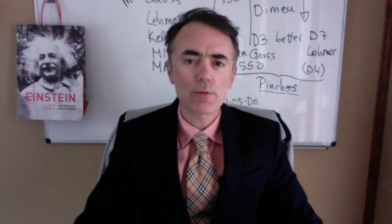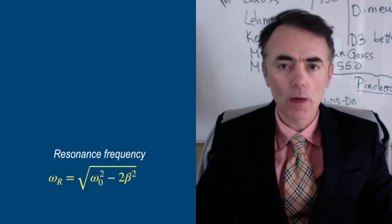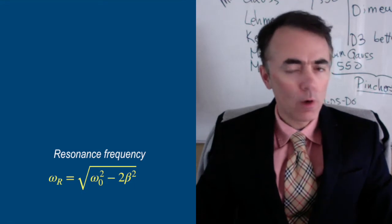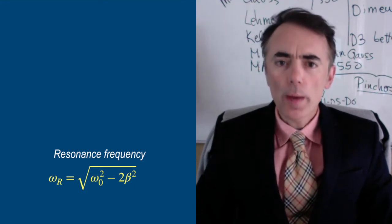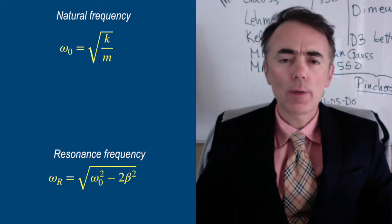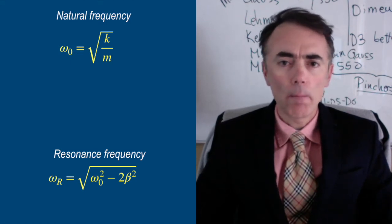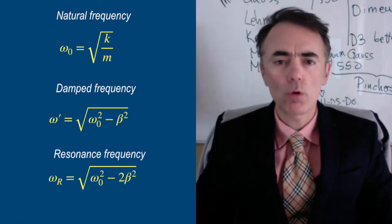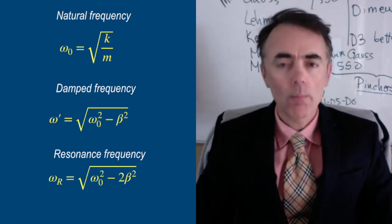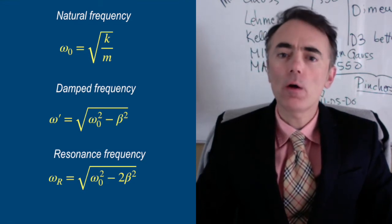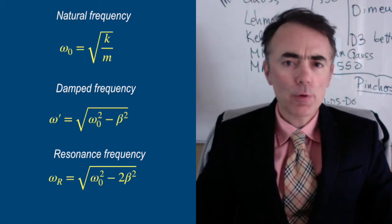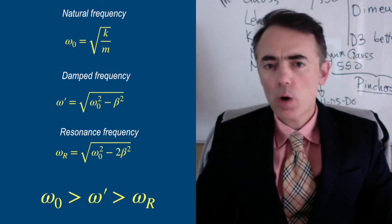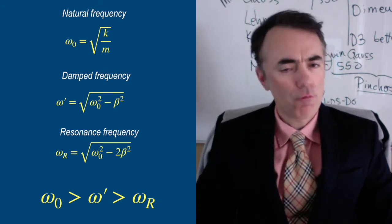The frequency of resonance is equal to the square root of omega naught squared minus two beta squared. This is the third frequency we've encountered so far. First it was omega naught, the natural frequency of the oscillator given by the square root of k over m. Then it was omega prime, the frequency of the damped oscillations which is the square root of omega naught squared minus beta squared. And now omega of resonance.